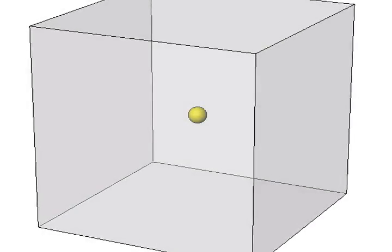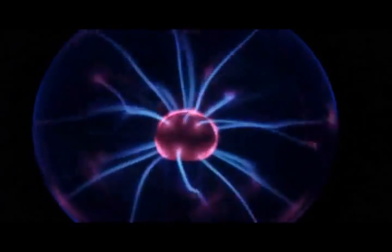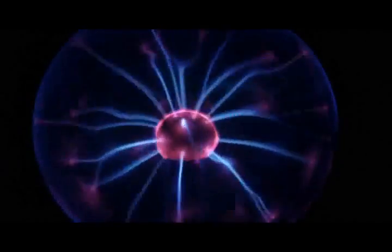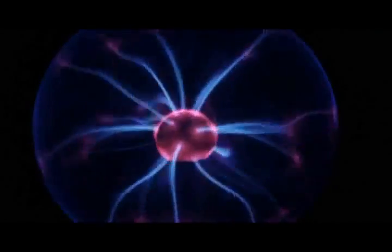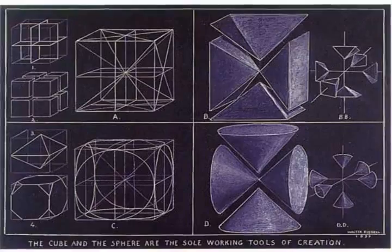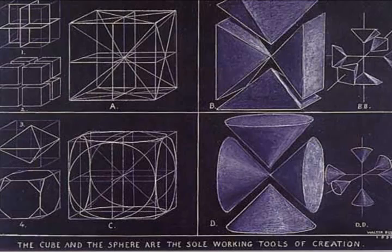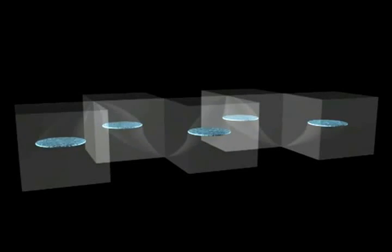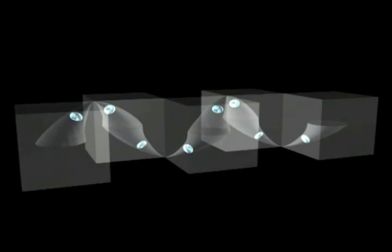The cube and the sphere are the sole working tools of creation. Electricity is the only force the Creator uses to perpetually create throughout eternity. The Creator's thinking is electric and is controlled by the Creator's omnipresent stillness. The Creator controls creation from within and without.